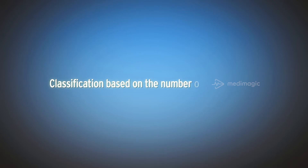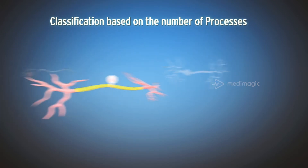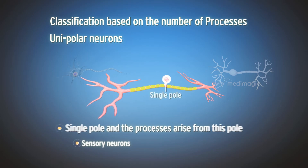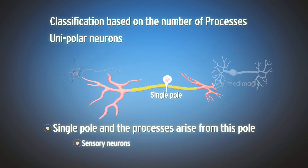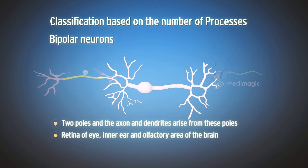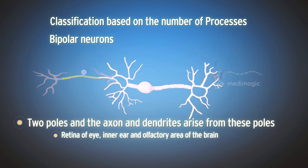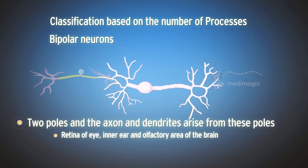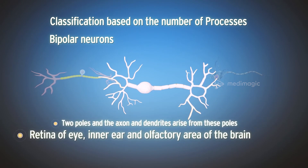Classification based on the number of processes: Unipolar neurons are neurons which have a single pole, and the processes arise from this pole. Sensory neurons are unipolar neurons. Bipolar neurons have two poles, and the axon and dendrites arise from these poles. Bipolar neurons are present in the retina of the eye, inner ear, and olfactory area of the brain.